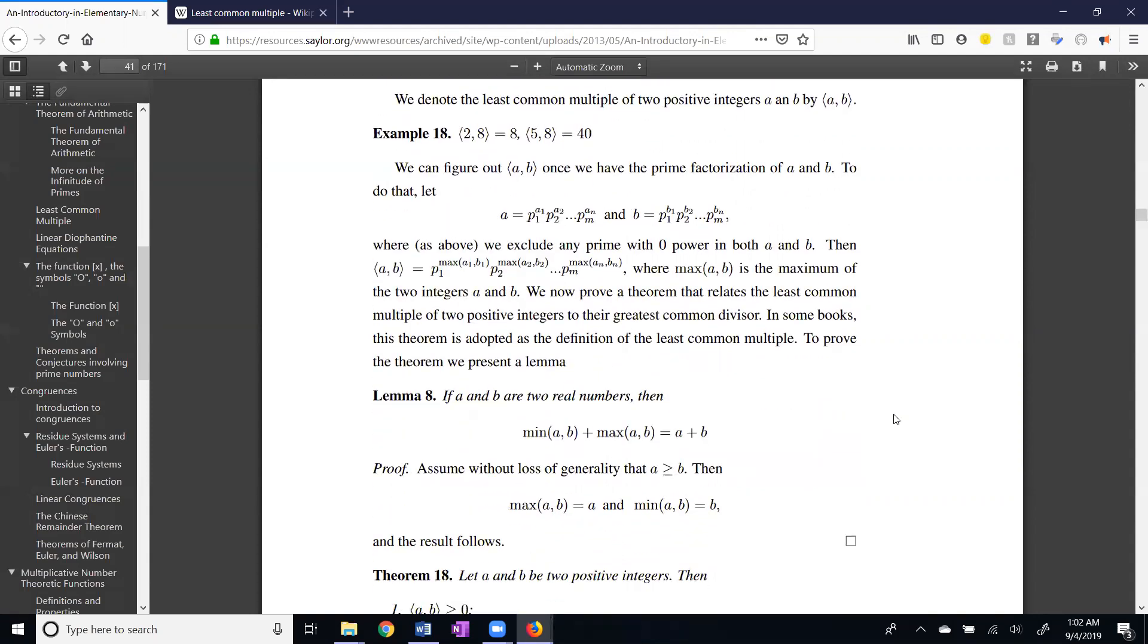There's a little lemma here, lemma 8. A lemma is a theorem that is a statement that can be proved, but it does not have long-term use, but is for a particular use. And this is kind of an obvious statement. If you have two numbers, A and B, the minimum of A and B plus the maximum of A and B is A plus B. The proof assumes without loss of generality that A is the larger one. The maximum is A, the minimum is B, therefore the minimum plus the maximum is A plus B.